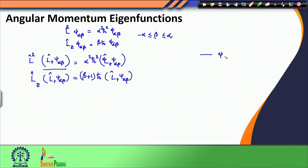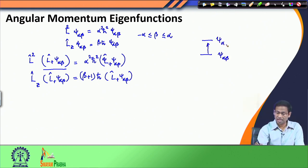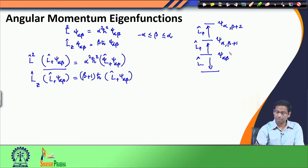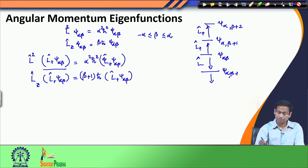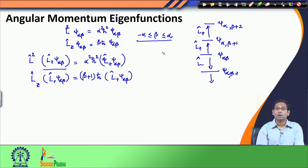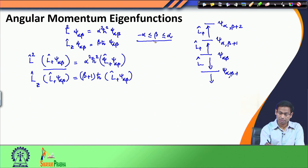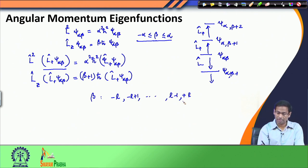So if we define one eigenfunction psi_alpha_beta as the simultaneous eigenfunction of L_square and L_z, the other eigenfunctions can be obtained by repeated action of the L_plus operator. Acting L_plus on psi_alpha_beta gives psi_alpha_(beta+1), applying it again gives psi_alpha_(beta+2), and so on. Similarly, applying L_minus on psi_alpha_beta gives psi_alpha_(beta-1), and so forth. In this way we can generate all other eigenfunctions of the angular momentum operator.